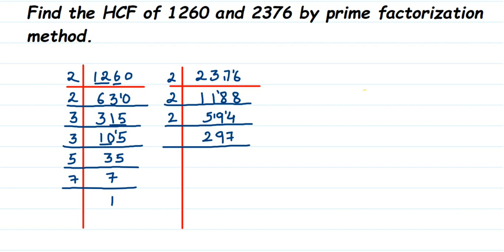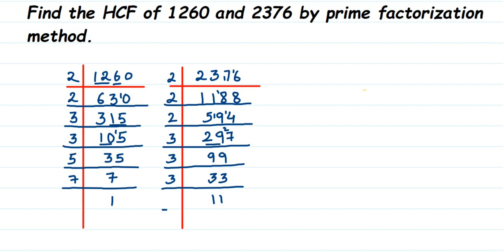Since 297 is odd, we try the next prime number, 3. Dividing 297 by 3 gives 99. Then 99 ÷ 3 = 33. Then 33 ÷ 3 = 11. And 11 is itself a prime number — it doesn't appear in any other multiplication table except its own — so we divide by 11, giving us 1. We stop here.